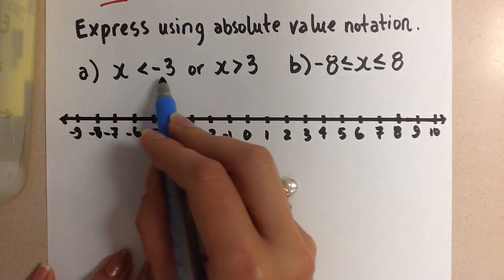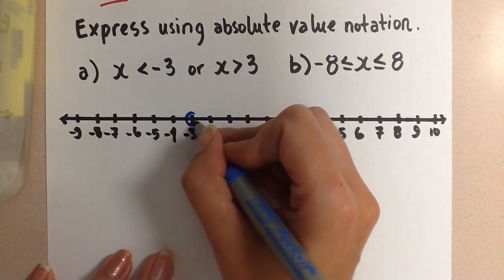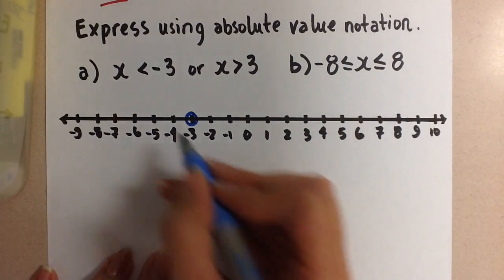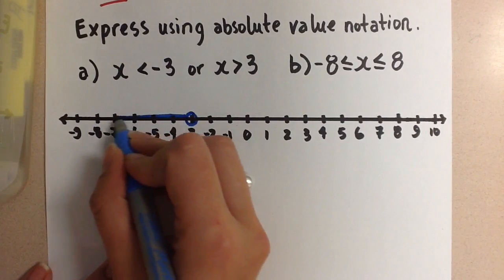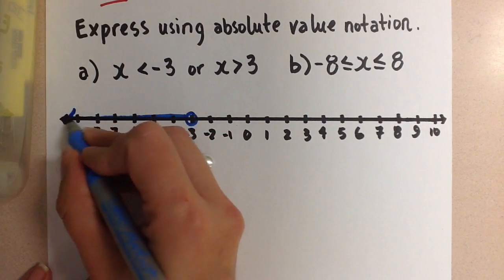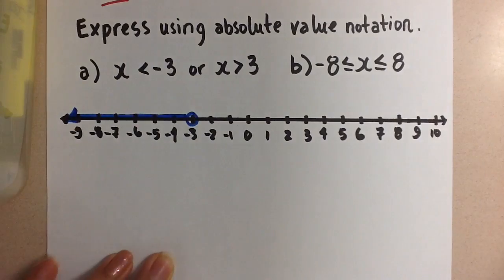When we have x is less than negative 3, we don't include negative 3, so we use an open circle there. And then x will be any value less than that negative 3.